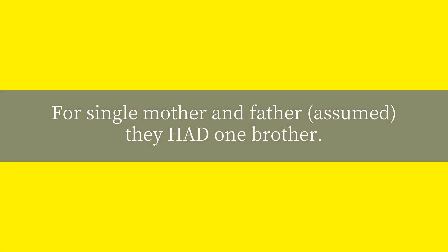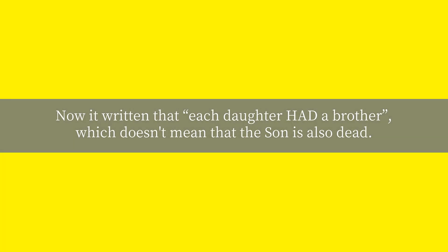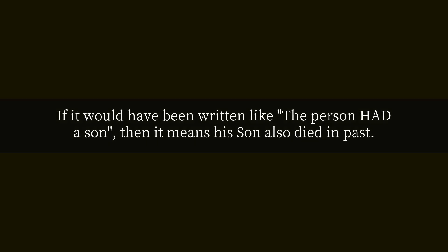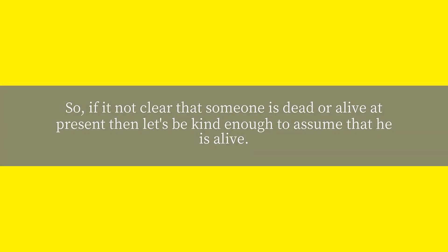For a single mother and father, assumed, they had one brother. Now, it is written that each daughter had a brother, which doesn't mean that the son is also dead. If it would have been written like 'the person had a son,' then it means his son also died and passed. So if it is not clear that someone is dead or alive at present, then let's be kind enough to assume that he is alive.